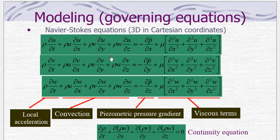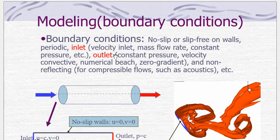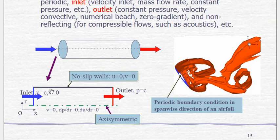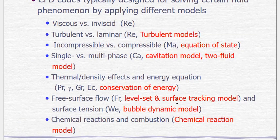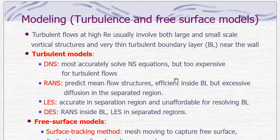We already discussed modeling and governing equations. The Navier-Stokes equations are 3D equations equivalent to Newton's second law of motion. Moving to boundary conditions, let's consider pipe flow: at the inlet, u is equal to a constant C, and the inlet velocity boundary condition is defined. Next we move to modeling turbulence and free surface models.